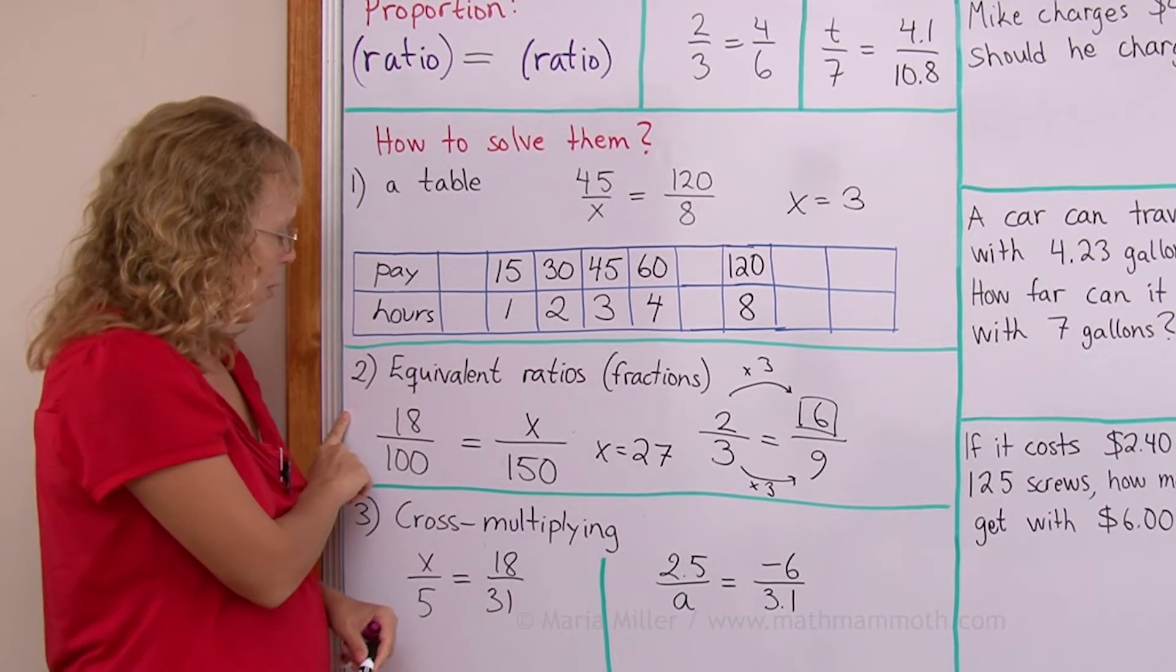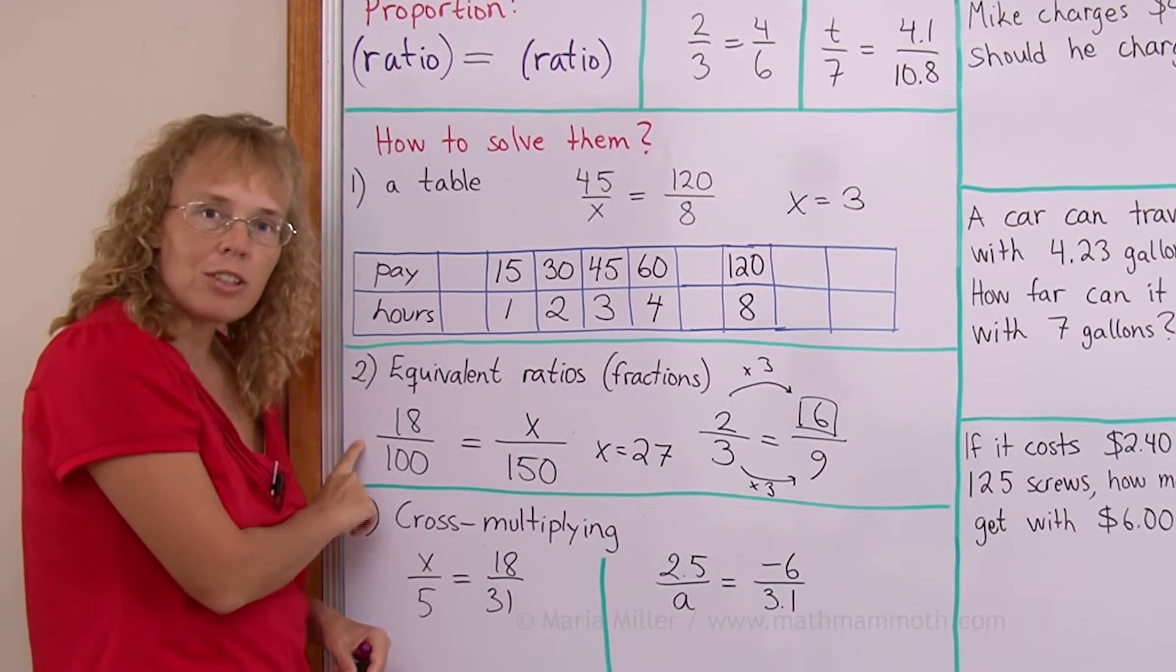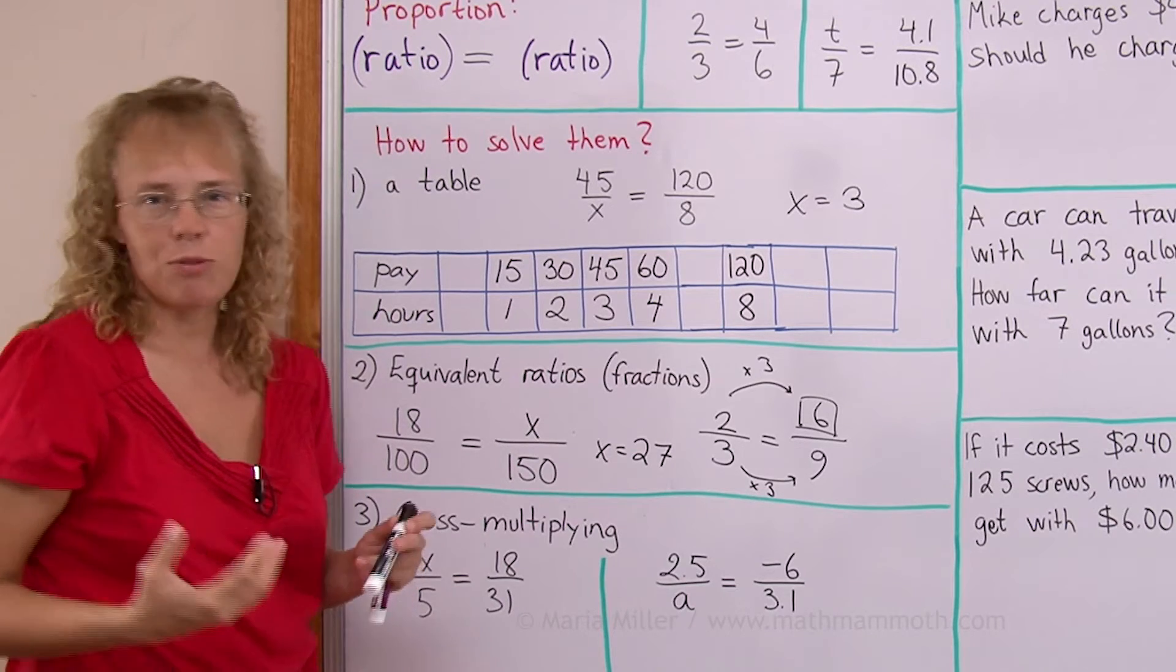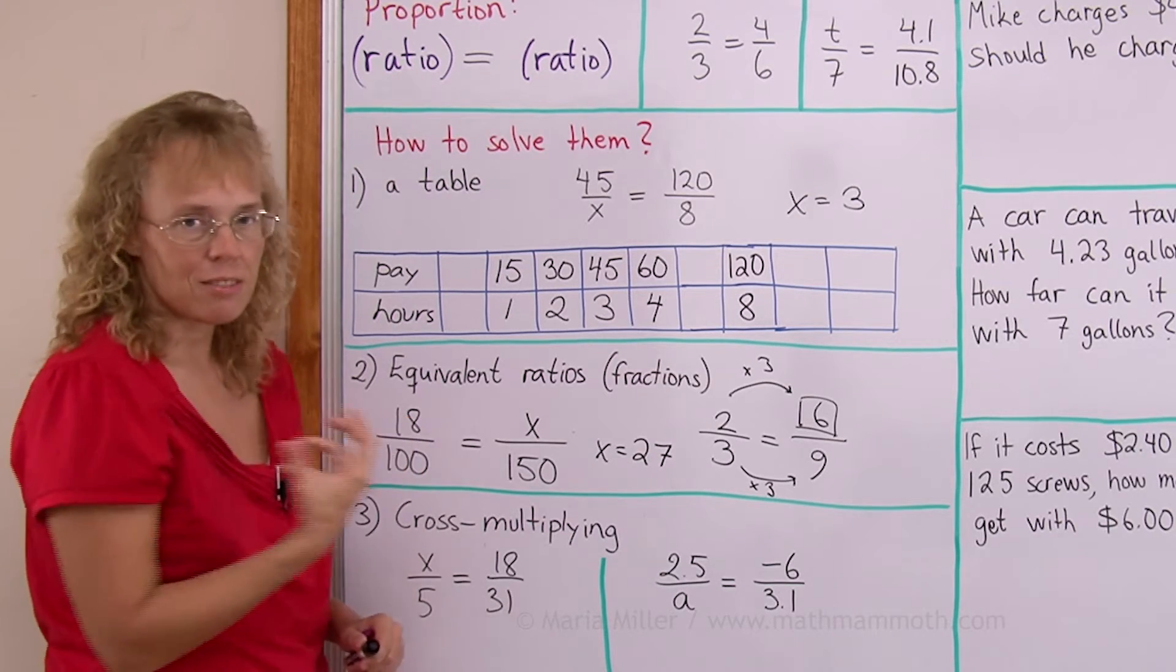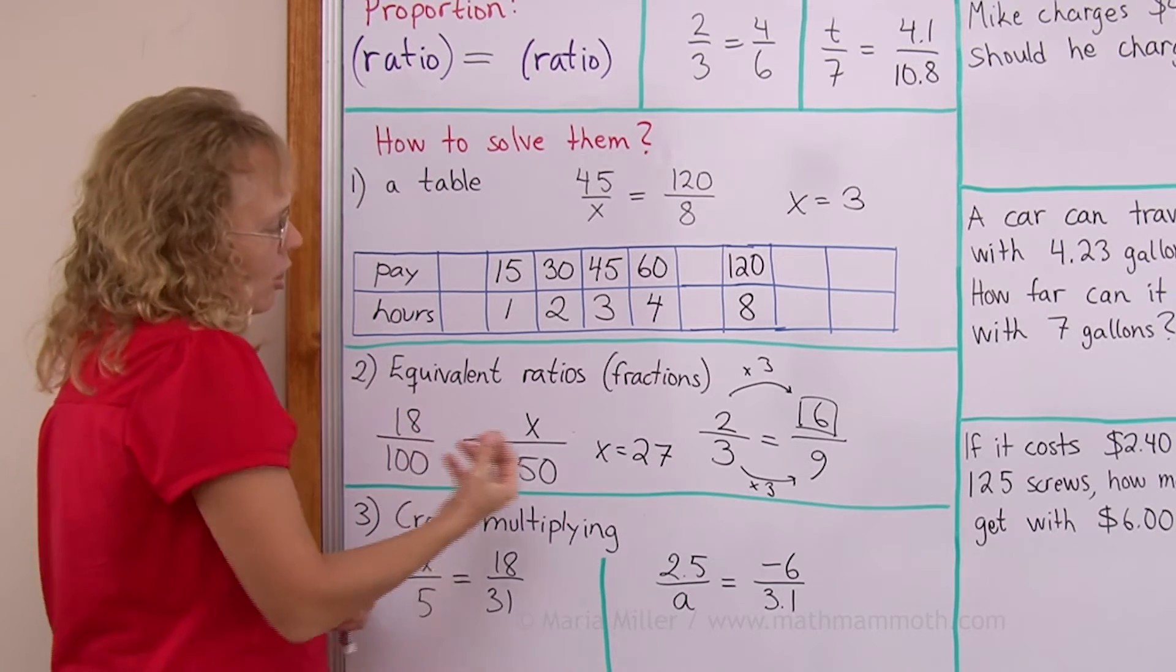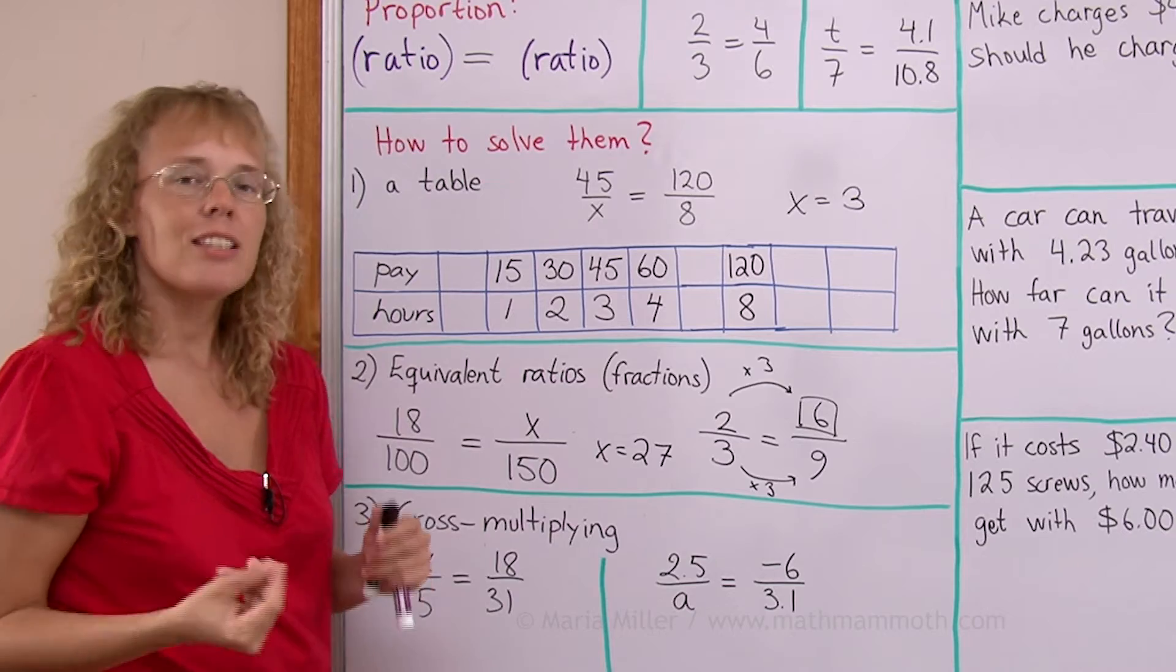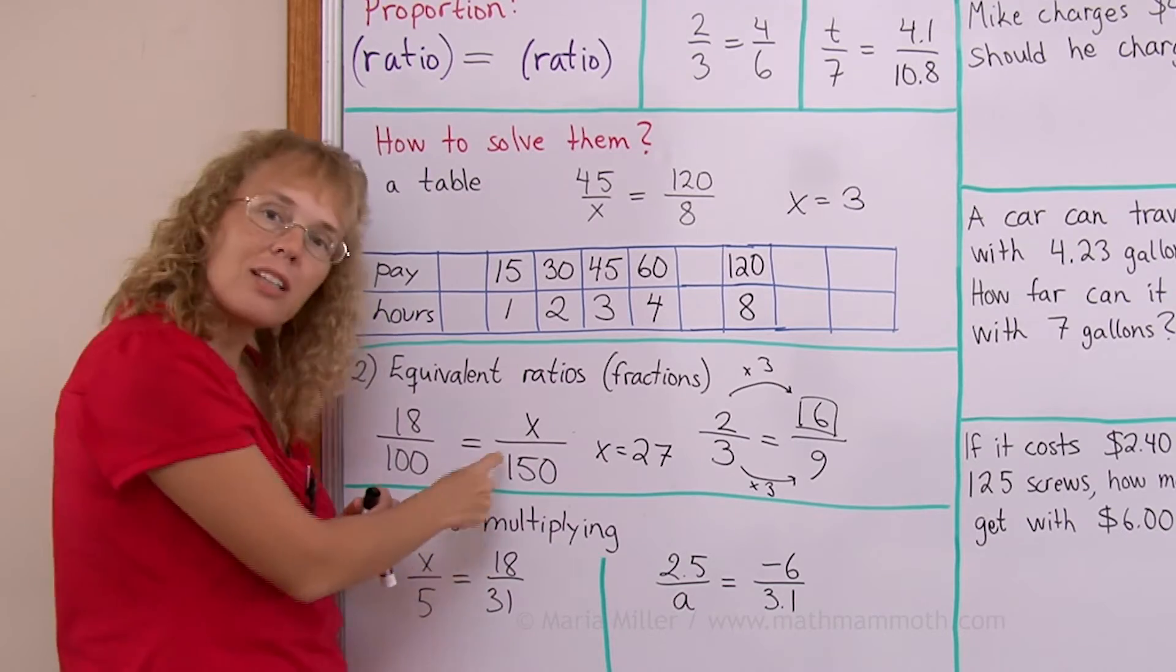This could be for example, let's say we are told that 18 people out of 100 do something, get the flu each year or something. 18 people out of 100. That's a ratio. And then we are asked, so how many people would you expect to get the flu in a group of 150 people?